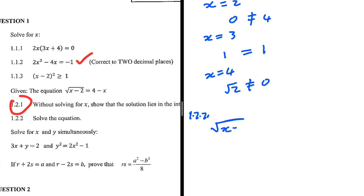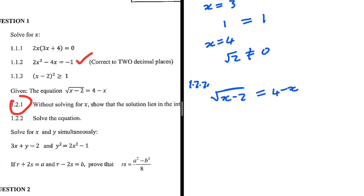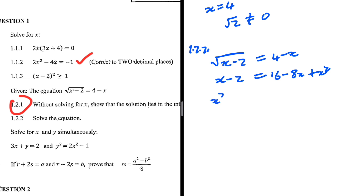For 1.2.2: square root of x minus 2 equals 4 minus x. Squaring both sides, we get x minus 2 equals 4 squared, which is 16, minus 8x plus x squared. So we have x squared minus 8x plus 16 on the right. Bringing everything to one side gives x squared minus 9x plus 18 equals zero.